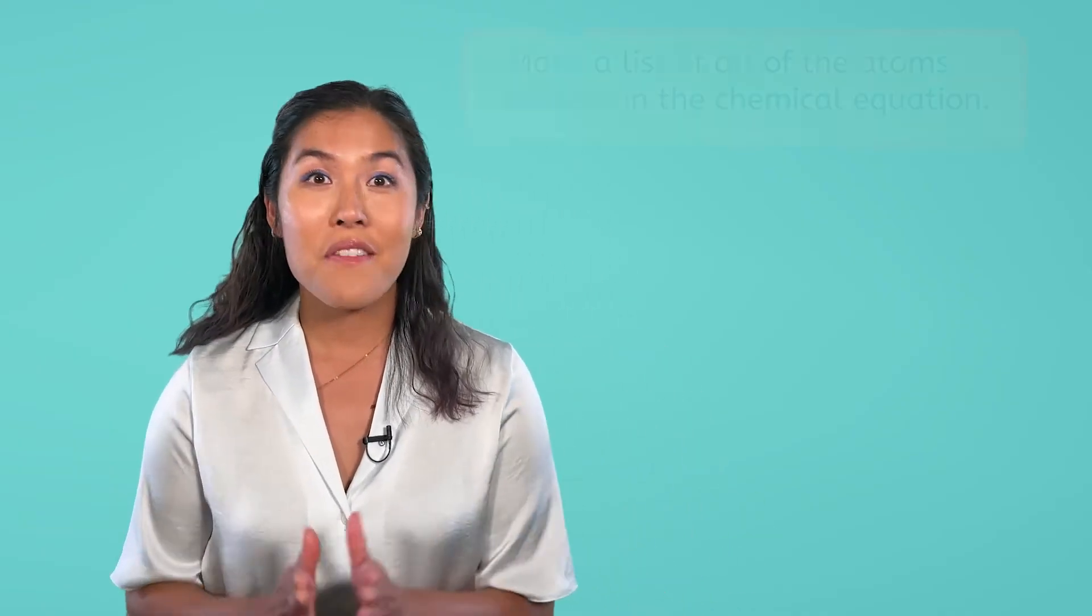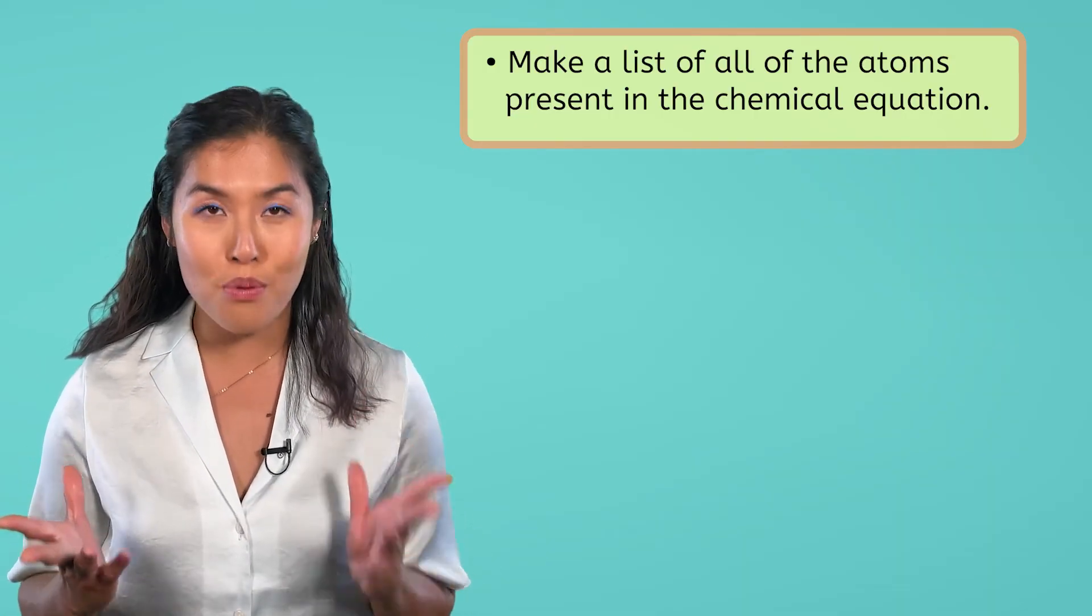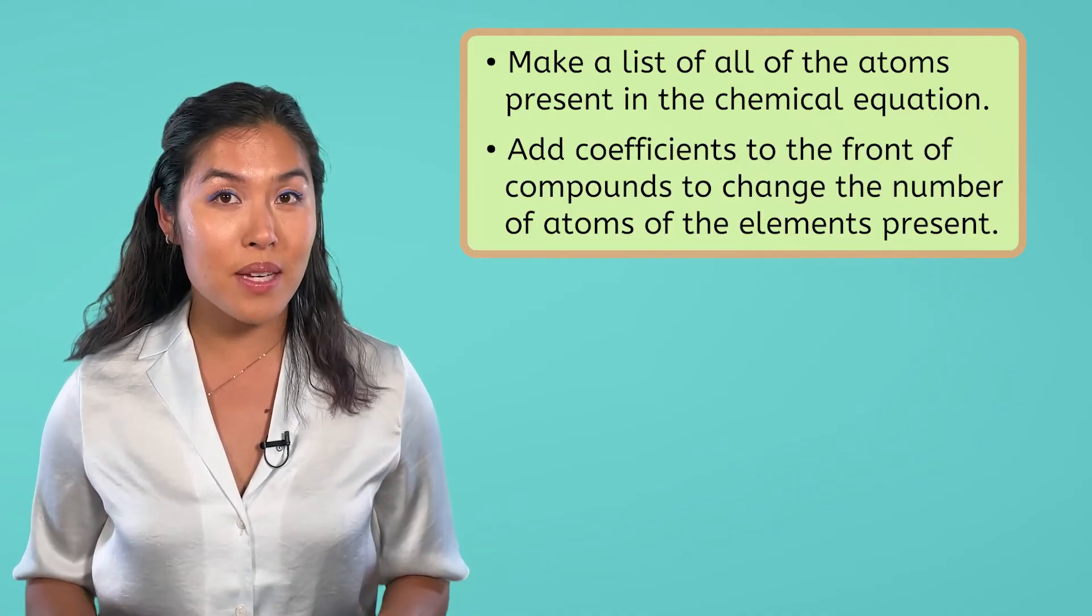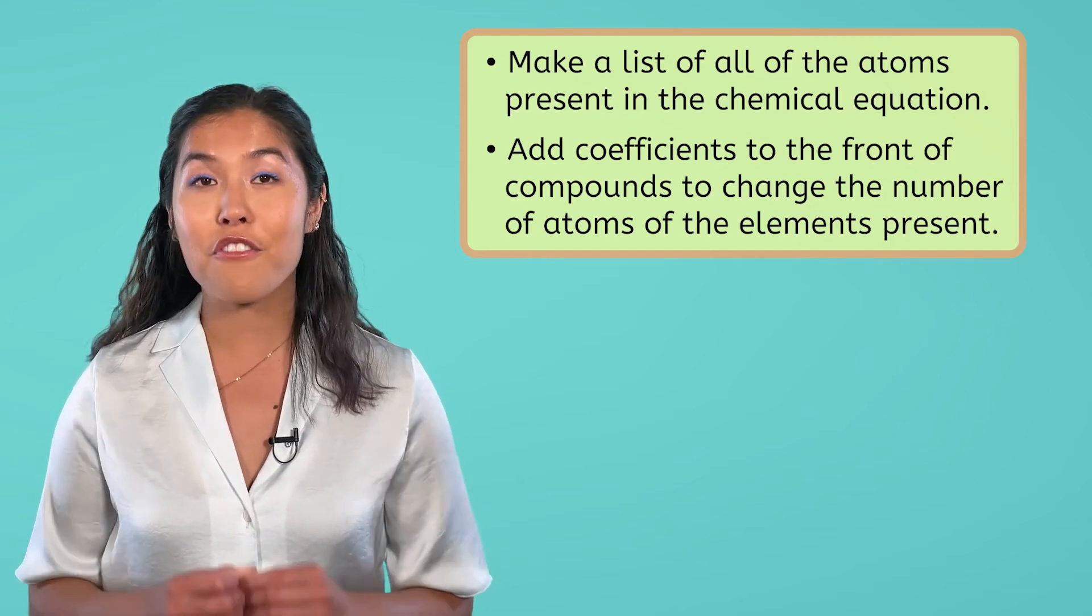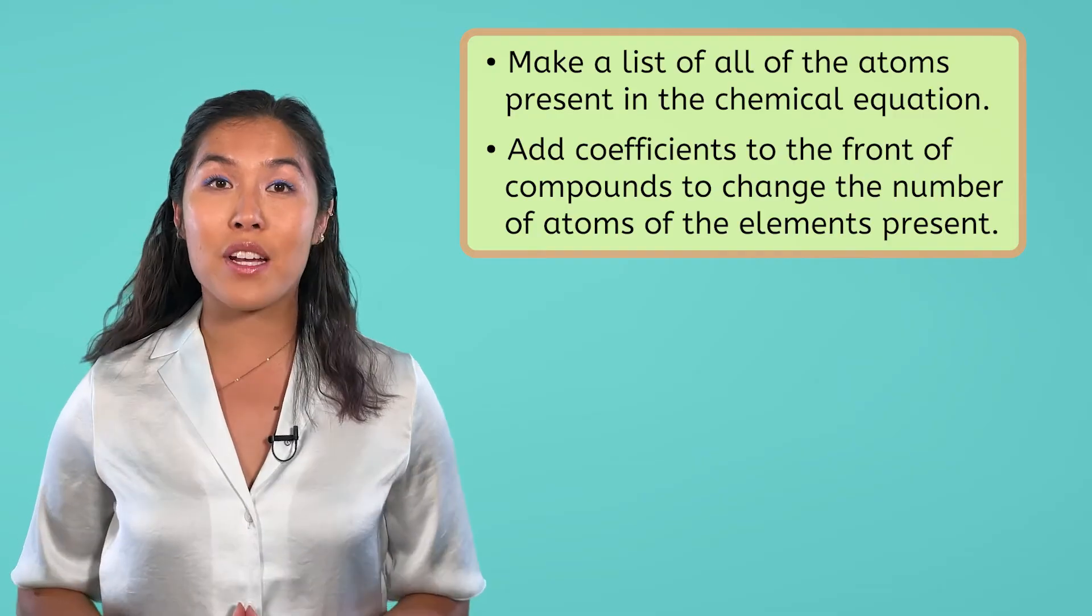This process of making sure that a chemical equation meets the law of conservation of mass is called balancing chemical equations. To balance a chemical equation, you can follow these steps. First, make a list of all of the atoms that are present in the reactants and the products. Next, look at the atoms of each element to see if you can add a coefficient or a large number in front of the chemical formulas to balance the number of atoms of each element.